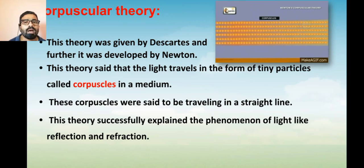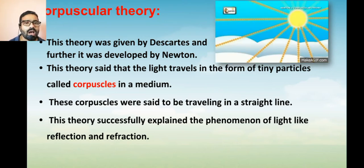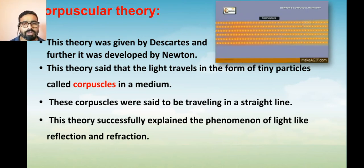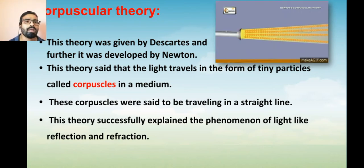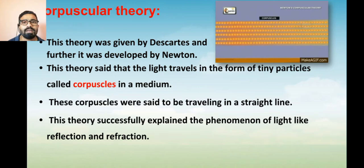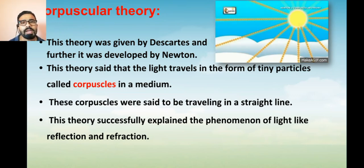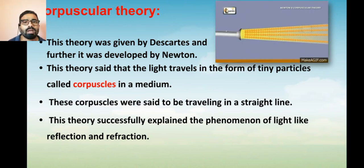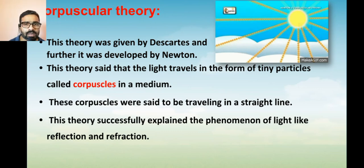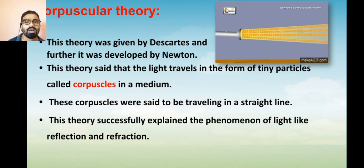Descartes said that these particles travel in a straight line. Even today we know that light travels in a straight line. He explained that since they are particles, they align one after another and travel in a straight line. Using the corpuscular theory, he was able to successfully explain some phenomena of light, namely reflection and refraction.